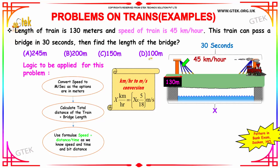The logic to apply: since the answer is in meters, you need to convert kilometers per hour into meters per second. You need to calculate the total distance, which is the train length plus the bridge length, and then use speed equals distance divided by time. With speed and time known, you can identify the length of the bridge.